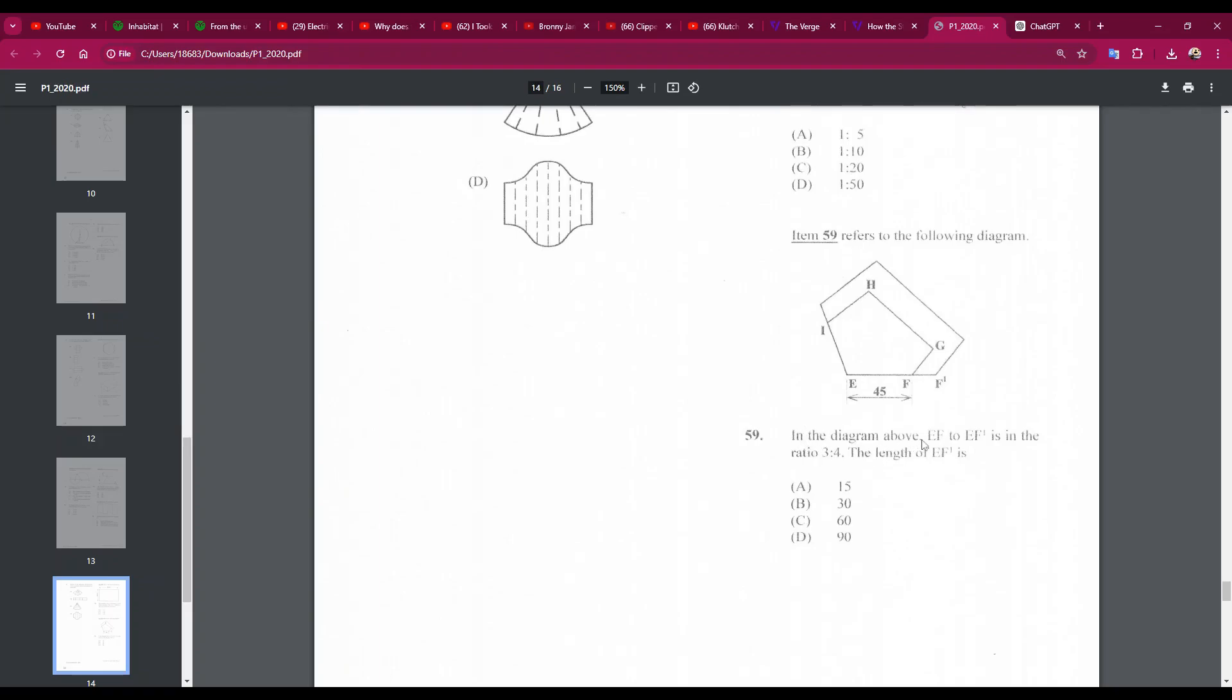Number 59: in the diagram above, EF to EF1 is in the ratio 3 to 4. The length of EF1 is... okay, so EF is 3, and it's 45. So that means 45 divided by 3 is 15, so each part is 15. So if this is 45 and EF1 is 4 parts, 4 by 15 is 60, or you could just add 15 to 45, and the answer is 60. So number 59C.